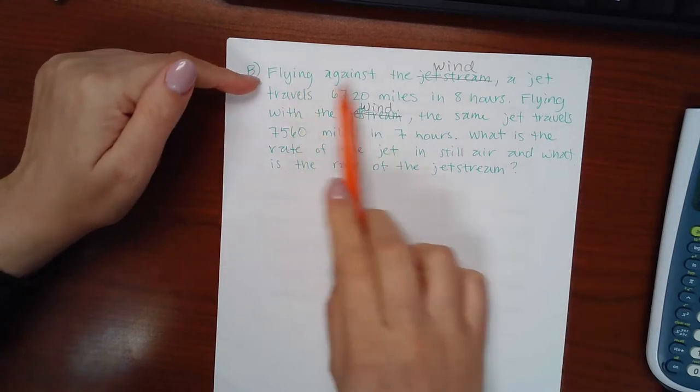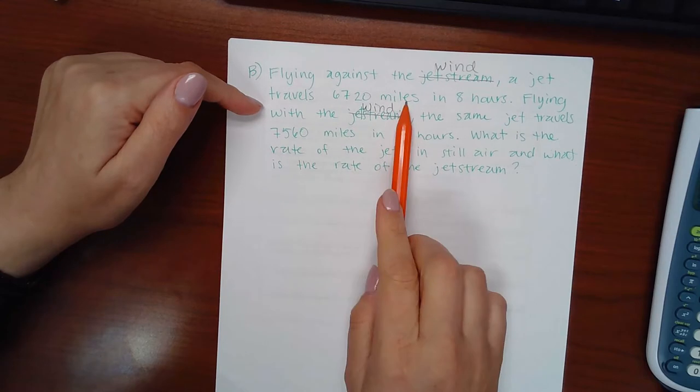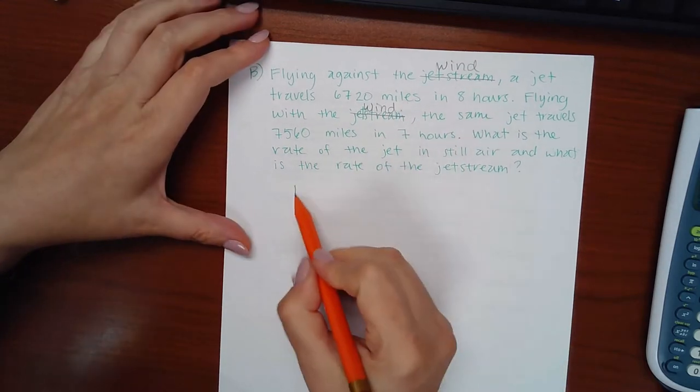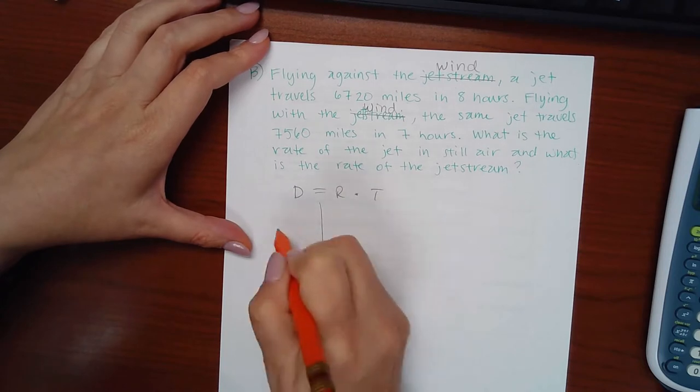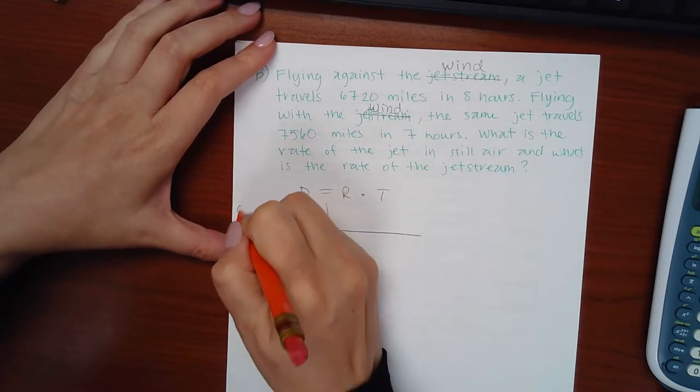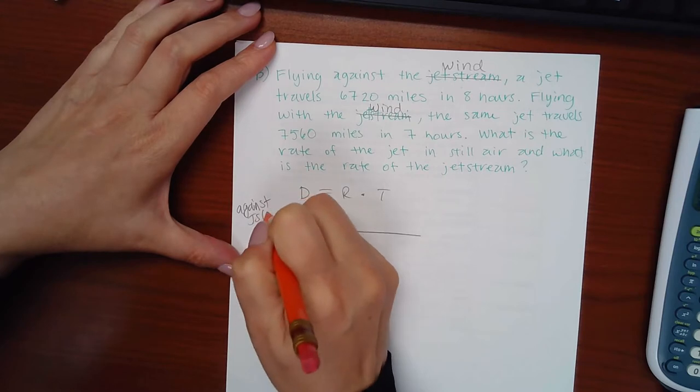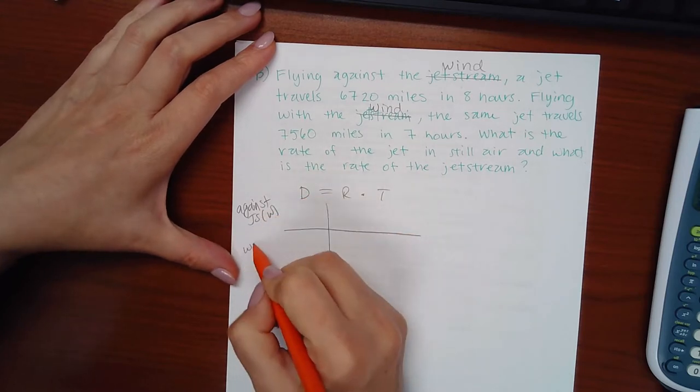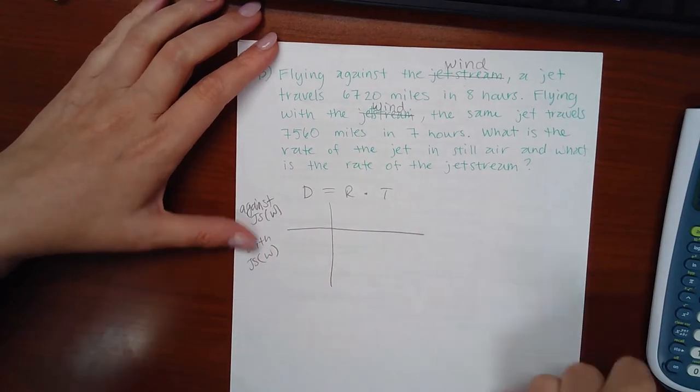So it says flying against the wind or against the jet stream, a jet travels this many miles in eight hours. So that's going to help me with my setup. So I've got traveling against the jet stream or the wind and then traveling with the jet stream or the wind, okay? Those are my two different cases.